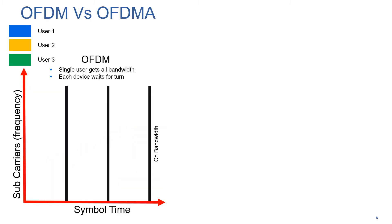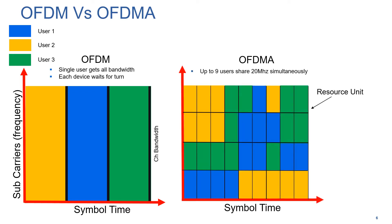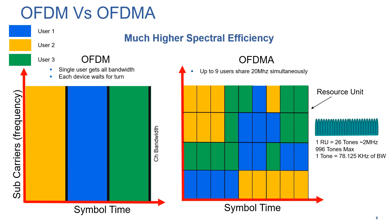Let's take a look at this in a little bit more detail. In this example, we're going to use three users. With OFDM using Wi-Fi 5, they would all take their turn to access the access point. But using OFDMA, we can support multiple users simultaneously. We can break down that channel into resource units. Each resource unit is made up of a number of tones — in this example, 26 tones, which is approximately 2 megahertz. One tone is separated by about 78 kilohertz. Using a 20 megahertz channel, we could in fact support up to nine users. In this example though, we're only breaking it down into three sub-channels.